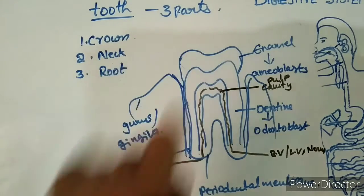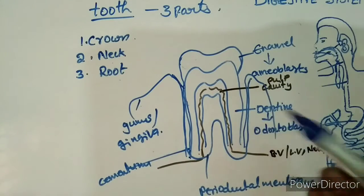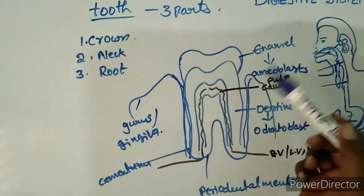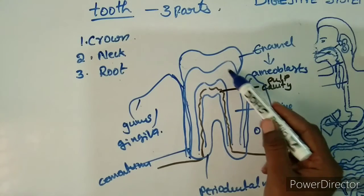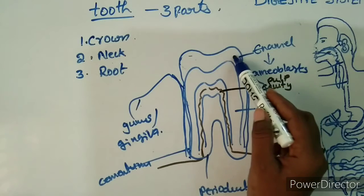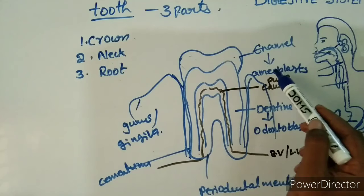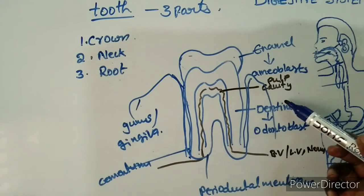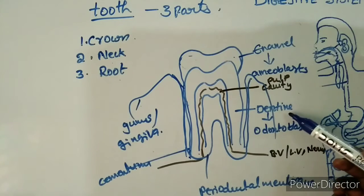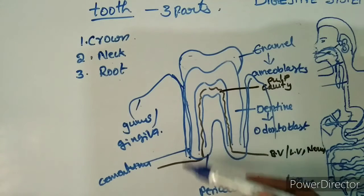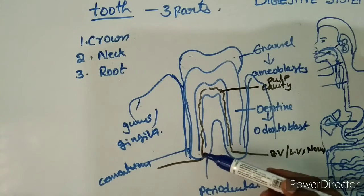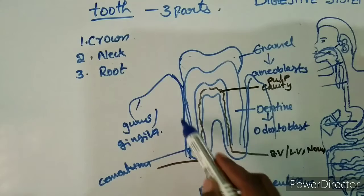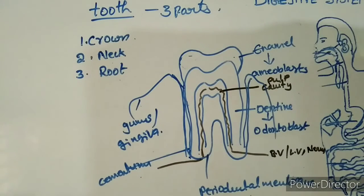To summarize the tooth structure: it has three parts — crown, neck, and root. Dentine is the second hardest substance, covered by cementum at the root. The exposed part is covered by enamel, secreted by ameloblasts (epidermal cells). Dentine is secreted by odontoblasts. The root is fixed in the jaw socket by cementum and the periodontal membrane. The basal part is covered by the gums called gingiva.